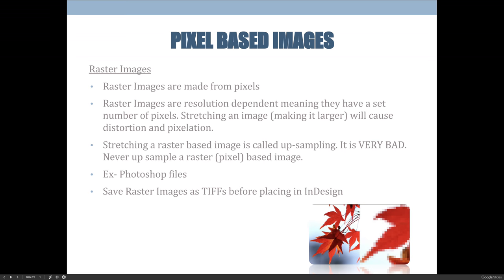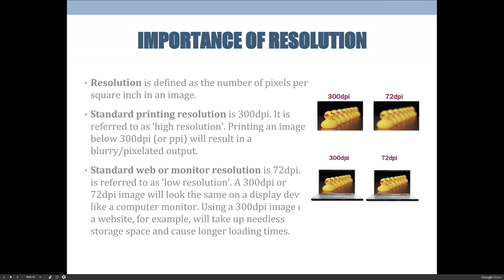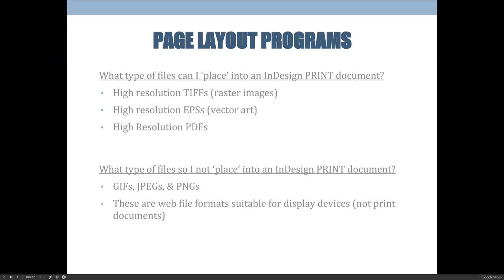Raster-based images can come from various sources: digital cameras automatically create raster-based images, scanning something on a computer also produces raster-based images, and most commonly you think of Photoshop files. We edit pixel or raster-based images in Photoshop, and vector images in Illustrator, to keep them separate — though you can edit both types in either program, it's not entirely appropriate. For our purposes, any time an image is raster-based, save it as a TIFF file, because high-resolution TIFFs are really good for raster-based images.